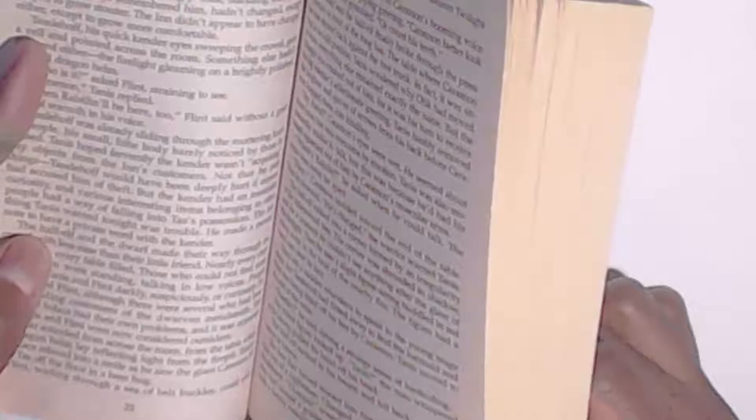Who is it? Flint asked, straining to see. Karamon, Tanis replied. Then Reislam will be here too, Flint said without a great deal of warmth in his voice. Tazalov was already sliding through the muttering knots of people, his small, lithe body barely noticed by those he passed. Tanis hoped fervently the kinder wasn't acquiring any objects from the inn's customers. Not that he stole things—Tazalov would have been deeply hurt if anyone had accused him of theft. But the kinder had an insatiable curiosity, and various interesting items belonging to people had a way of falling into Taz's possession. The last thing Tanis wanted tonight was trouble. He had made a mental note to have a private word with the kinder.